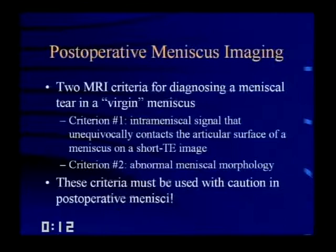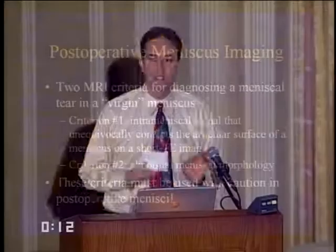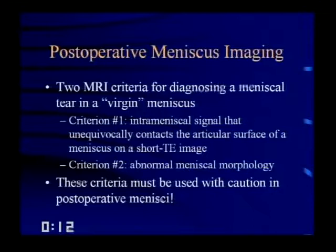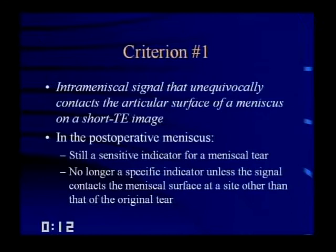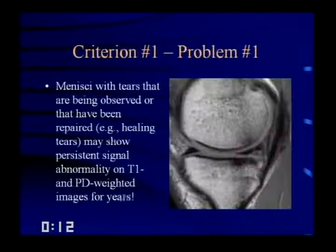For the post-operative meniscus, the two MRI criteria must be used with extreme caution. Criteria number one — intrameniscal signal contacting the articular surface on a short TE image — remains sensitive but is no longer specific unless the signal is at a site other than the original tear. Menisci with healing repairs can have this signal for years, and after partial meniscectomy, the resected fragment often doesn't include the entire area of abnormal signal, leaving degenerative signal that contacts the articular surface and looks like a tear.